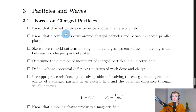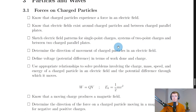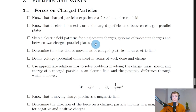Starting with section one, forces and charged particles. You should know that charged particles experience a force in an electric field. The definition of an electric field is a region around a charge in which another charge will experience a force — but remember charges cannot experience their own electric field. Electric fields exist around charged particles and between charged parallel plates. You need to be able to sketch electric field patterns for single point charges, systems of two point charges, and between two charged parallel plates, including single positive and negative charges, opposite charges, like charges, and parallel plates where a uniform field is set up. Remember the field lines always go from positive to negative.